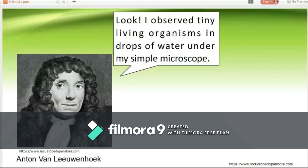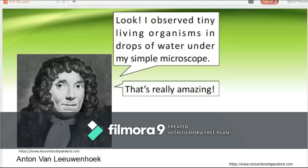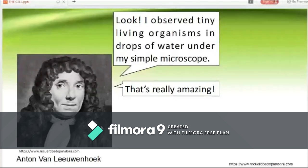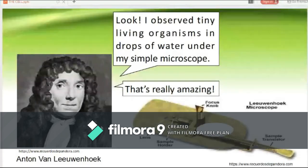Leeuwenhoek found it really amazing. When he observed those tiny living organisms, he collectively termed them 'animalcules.' This is the simple microscope he used way back then. Despite the limitations of his lenses — as you can see how crude that is — van Leeuwenhoek observed the movements of protozoa and sperm.